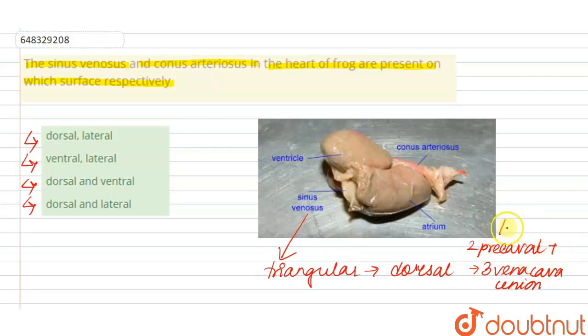Conus arteriosus is a triangular sac-like structure located on the ventral side of the heart and it is where the ventricle opens up. The conus arteriosus helps in sending the blood out from the heart.